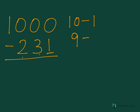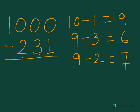So here: 10 minus 1, 9 minus 3, and 9 minus 2. So 10 minus 1 is 9, 9 minus 3 is 6, and 9 minus 2 is 7.